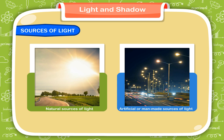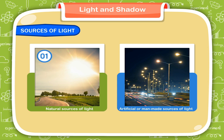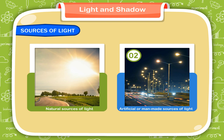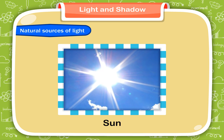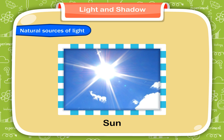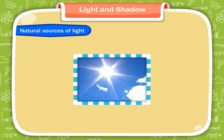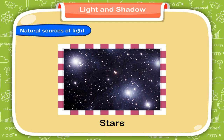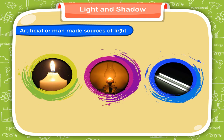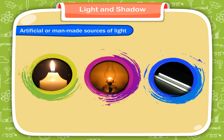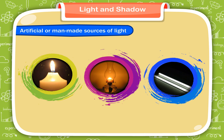There are two sources of light: natural sources of light, and artificial or man-made sources of light. The sun has an enormous amount of energy and is the main natural source of light. Stars are also natural sources of light. Artificial or man-made sources of light enable us to see objects during night time.